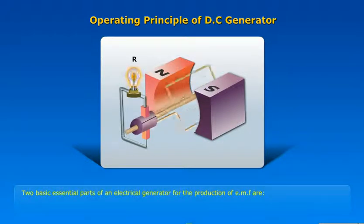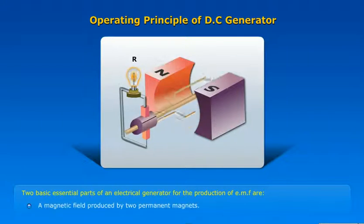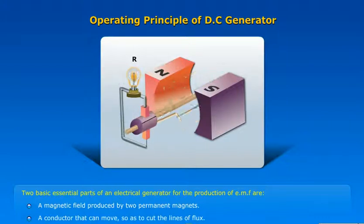Two basic essential parts of an electrical generator for the production of EMF are: a magnetic field produced by two permanent magnets, and a conductor that can move so as to cut the lines of flux.